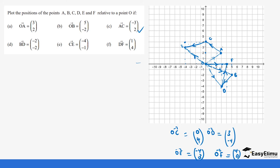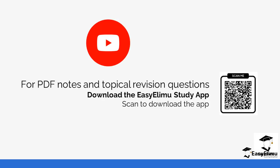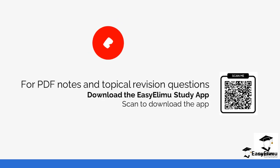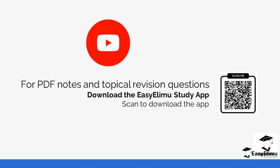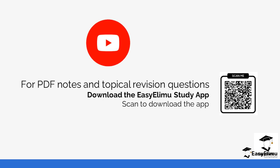So I hope you've seen how we used existing information to get our position vectors. That's how you work it out, and you are able to get the position vectors of A, B, C, D, E, and F relative to O. You can get more revision questions like this on the app, along with notes on the same topic. Getting the position vectors is very key, especially in working out past-paper questions. See you in the next lesson.